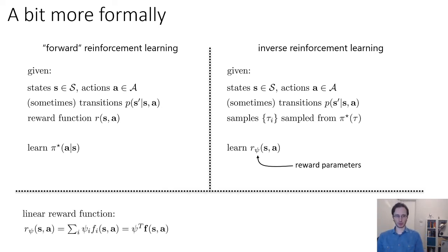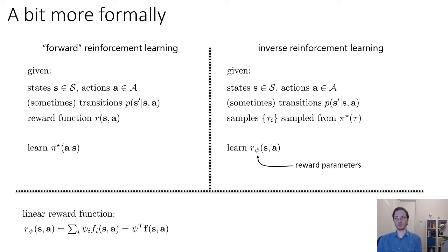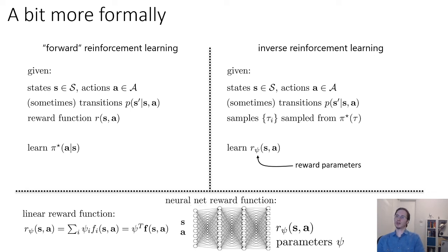There are many different choices we could make for the reward parametrization. In the classical inverse reinforcement learning literature, a very common choice is a linear reward function — a weighted combination of features, written as psi^T times F, where F is a vector of features. You can intuitively think of these features as things the agent wants or does not want, and what you're trying to determine is precisely how much they want or don't want each of those things. In deep reinforcement learning, we might also want neural network reward functions that map states and actions via a deep neural network to a scalar-valued reward, parametrized by psi denoting the network parameters. Once we've recovered the reward function, we would use it to learn the optimal policy pi star.